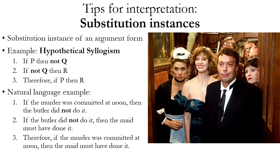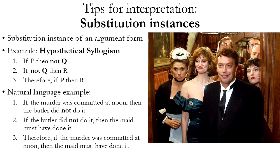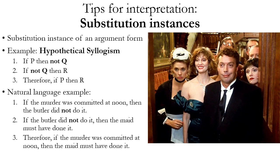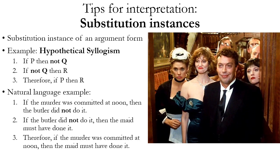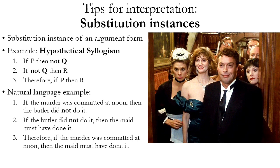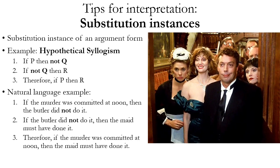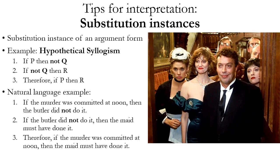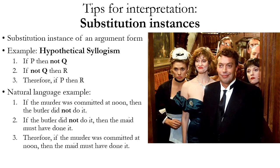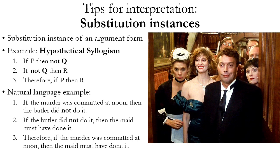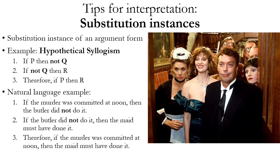The logical forms that we've looked at before and defined are defined in their simplest possible aspect. So you can come up with what are called substitution instances of all of those argument forms, where hypothetical syllogism, for example, is defined as if P then Q, if Q then R, therefore if P then R. You can think of the argument form hypothetical syllogism as that pattern of operators in the premises and the conclusion — two premises that have the conditional or if-then, and a conclusion that has the if-then.